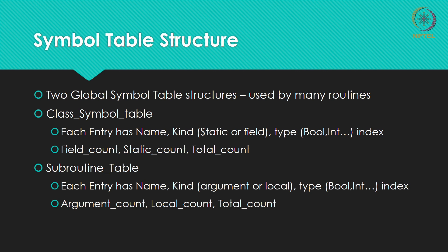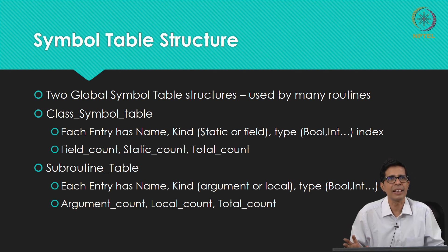Similarly, in the subroutine table there will be multiple entries. Each entry will have the name of the variable, the kind (either argument or local), the type (boolean, int, etc.), and an index as described in module 10. In addition to these entries, we will have argument count, local count, and total count, which is argument count plus local count. These are the two symbol table structures that will aid our compilation process.